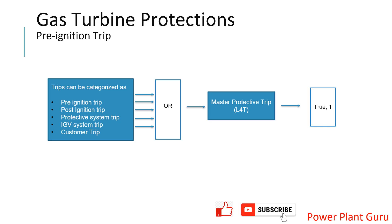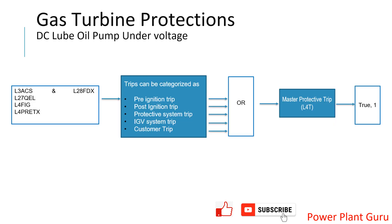There are different kinds of gas turbine trips, and we have covered those in previous videos — you can find them in the description link or the playlist. There are pre-ignition, post-ignition, protective system, IGV, and customer trips. If any one of these is active, it latches the master protective trip signal, and if this signal is true the gas turbine trips. In this video we will talk about only the pre-ignition trip part, which may be triggered by signals L3ACS, 28FDX, QEL, and FIG.